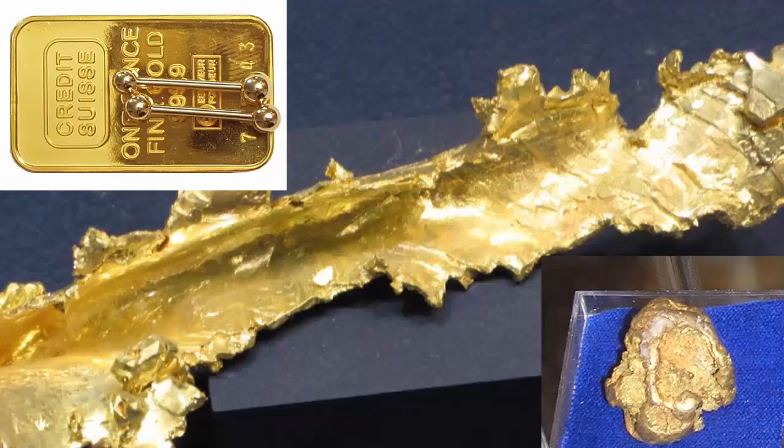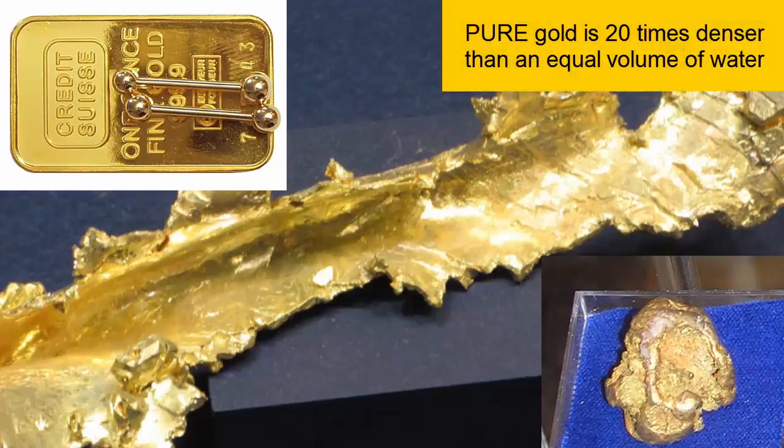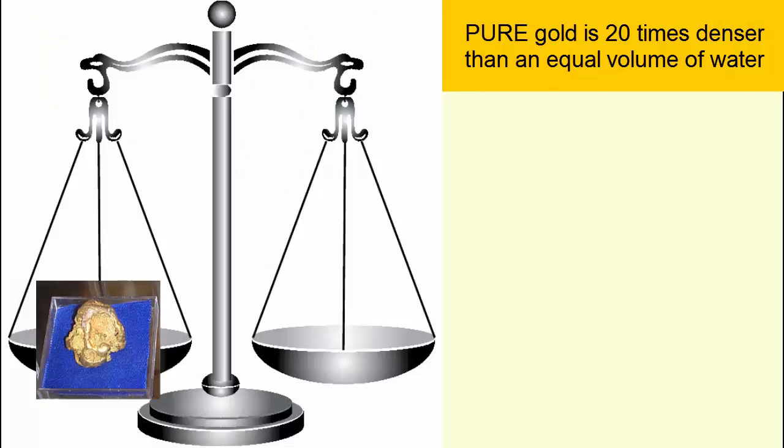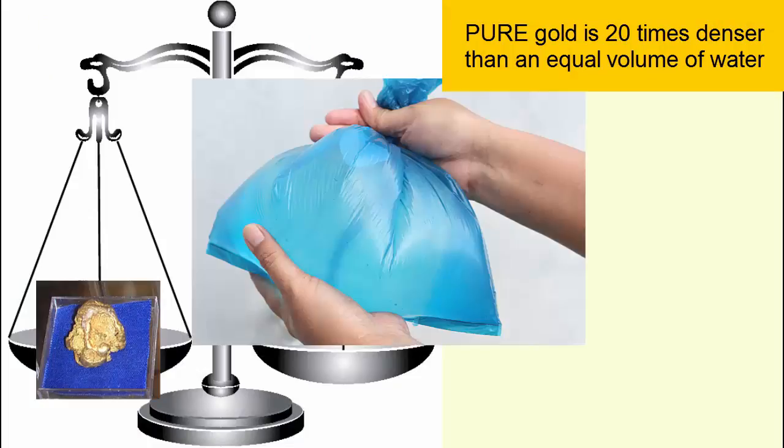So how do we use density to determine the purity of gold? Pure gold has a density 20 times greater than water. So weigh your gold sample and compare it to the weight of 20 times the gold nugget's volume in water. If they aren't the same, the gold isn't pure.